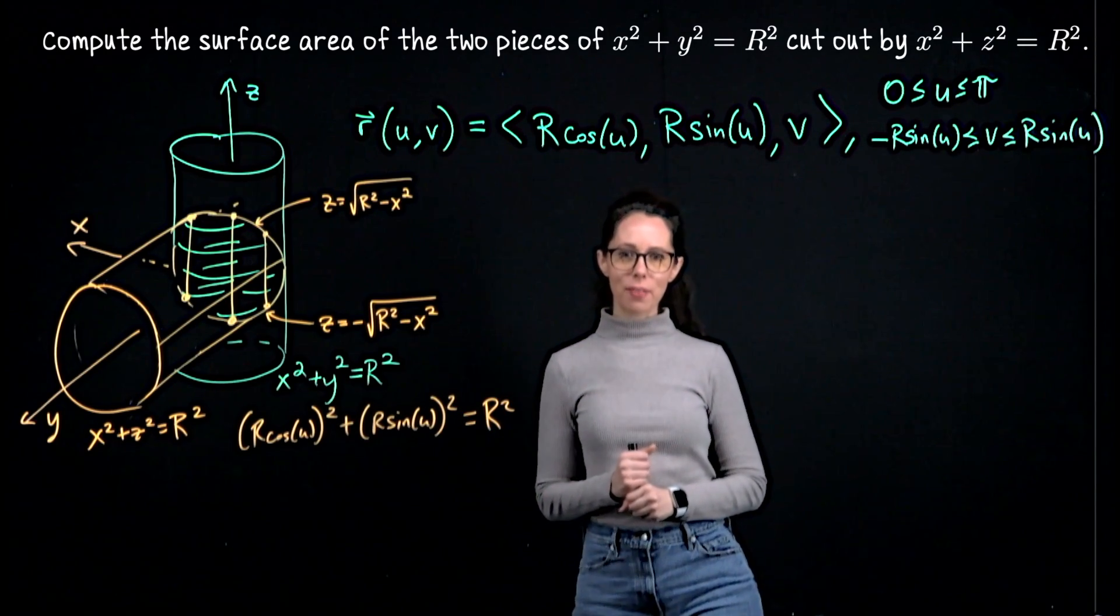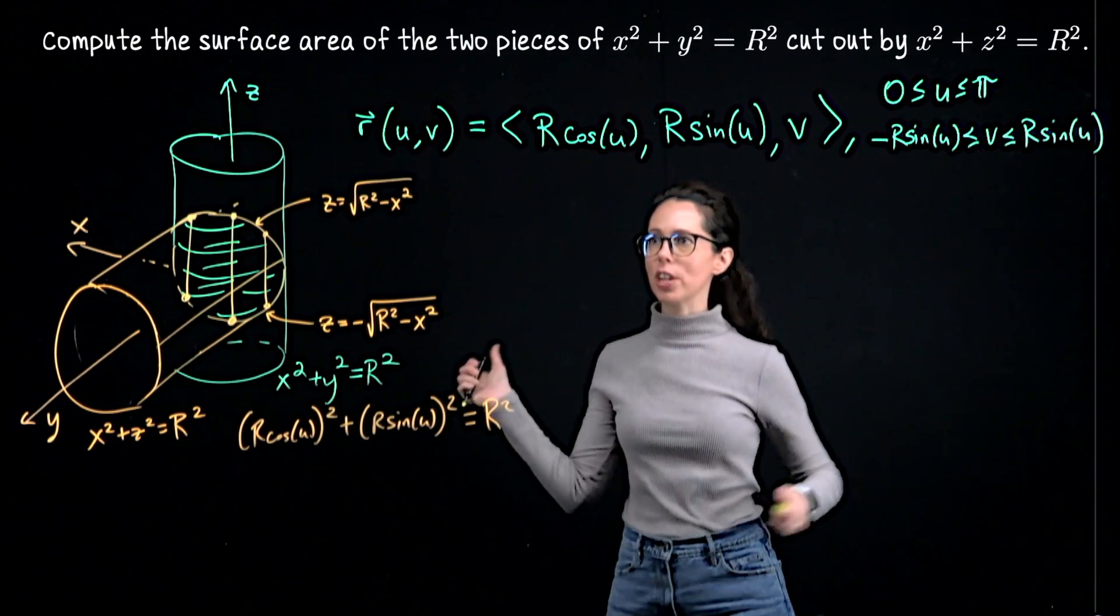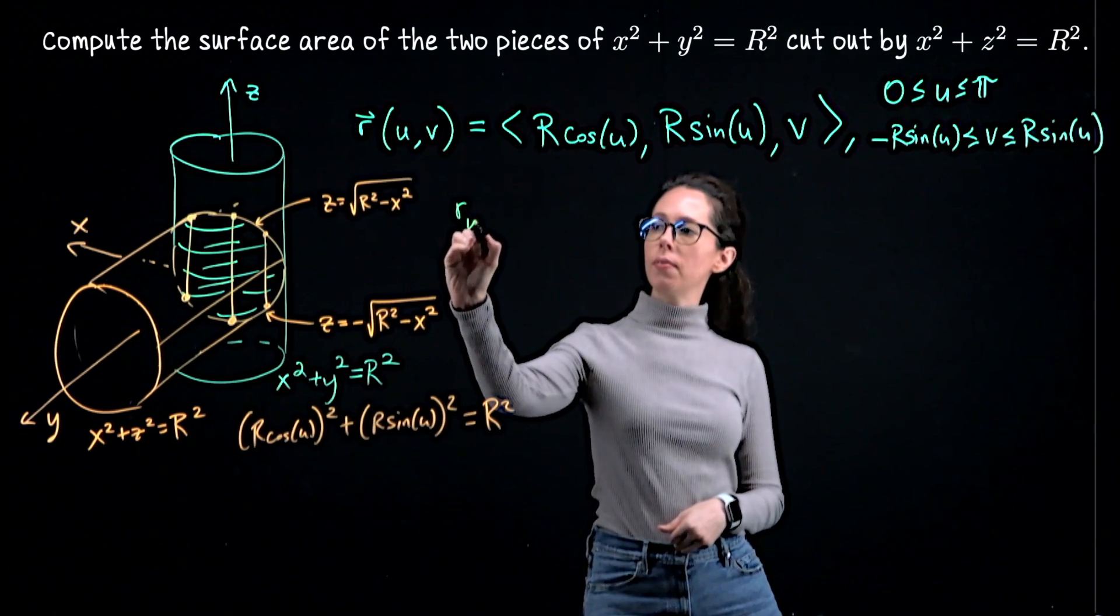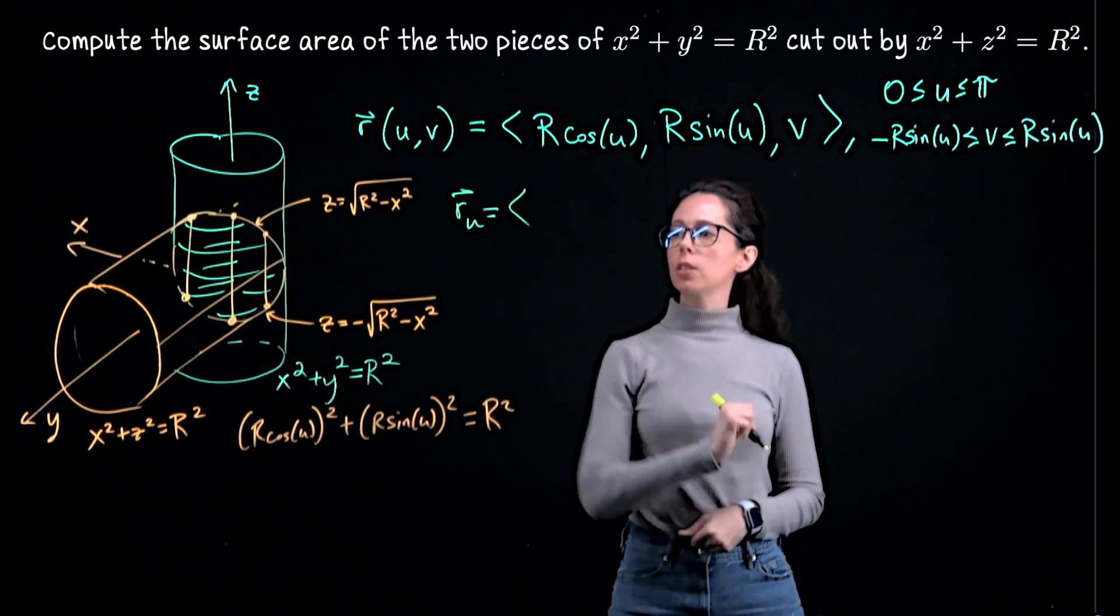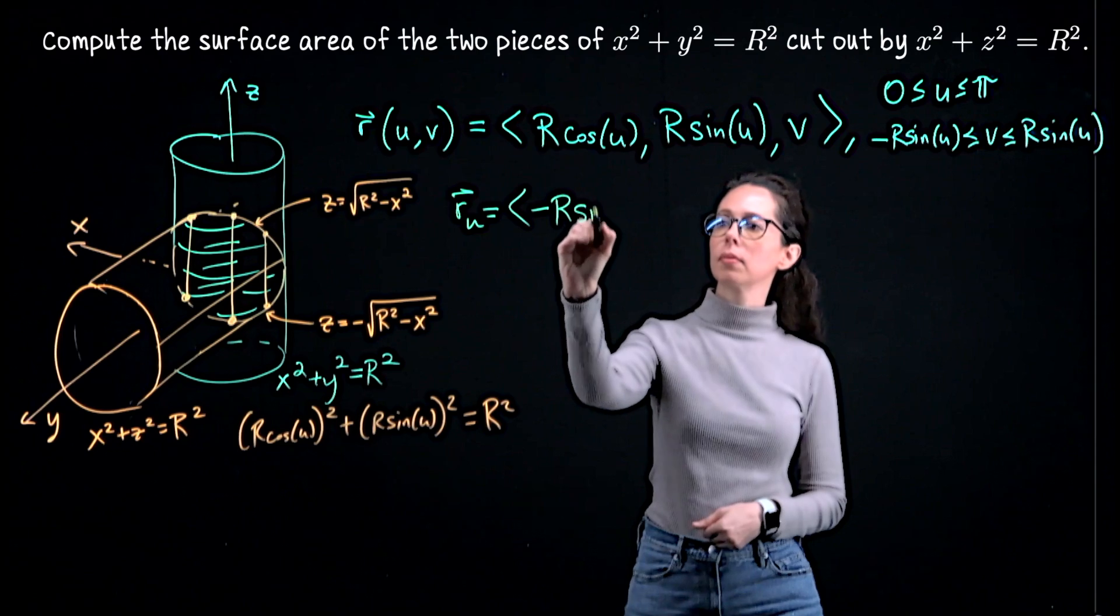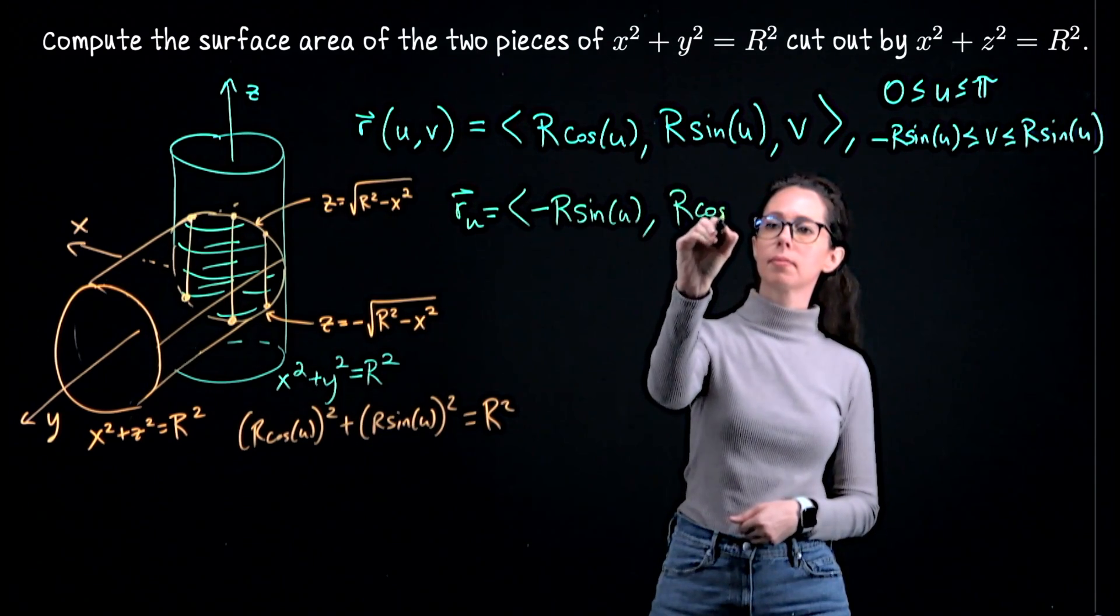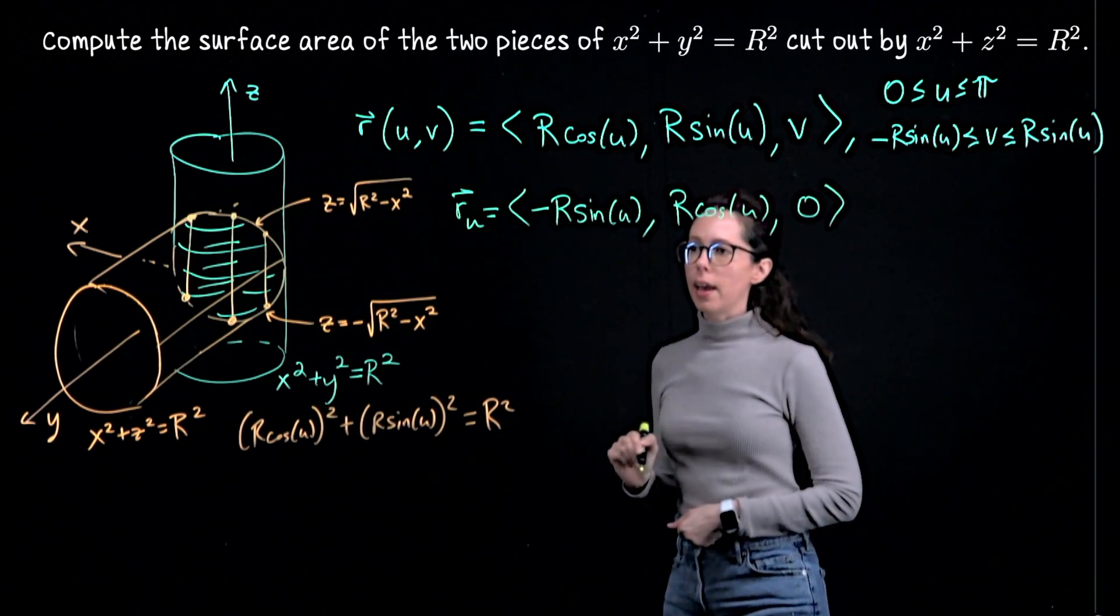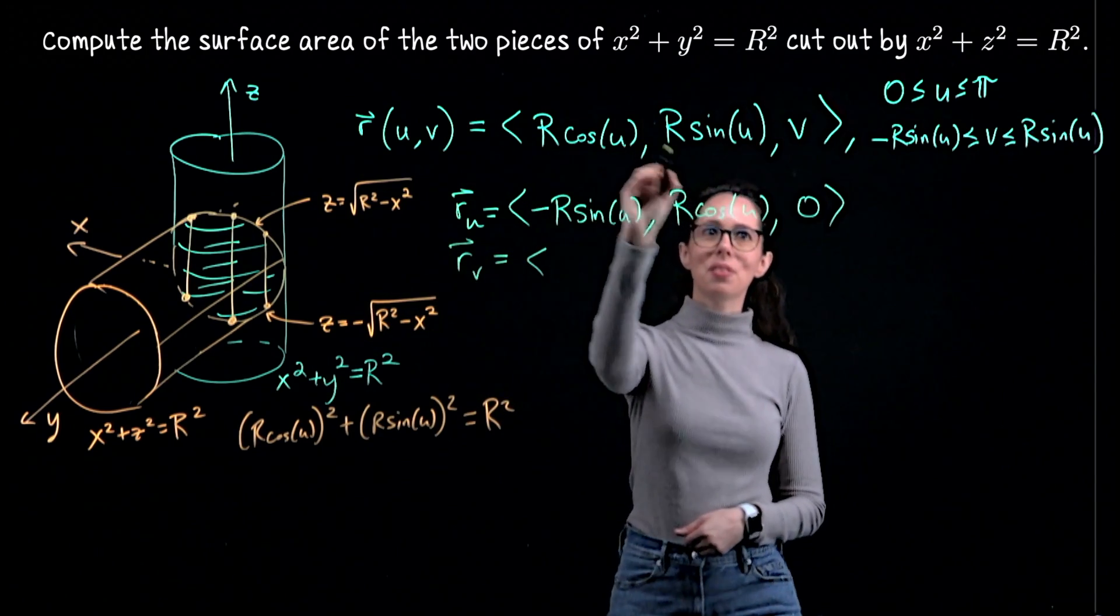Now we're ready to set up and evaluate the double integral that gives us the surface area of our region. To do that I first need to take this parametrization. And compute the vectors of partial derivatives with respect to u and with respect to v. So what I call r sub u will be negative R sine of u, R cosine of u, 0. And then r sub v will be 0, 0, 1.